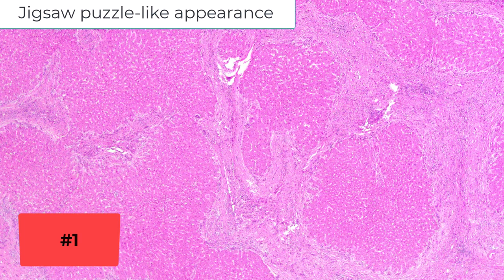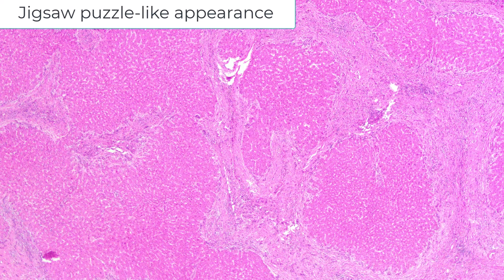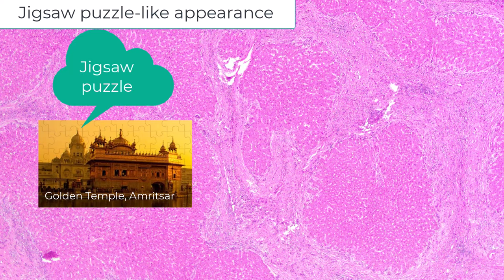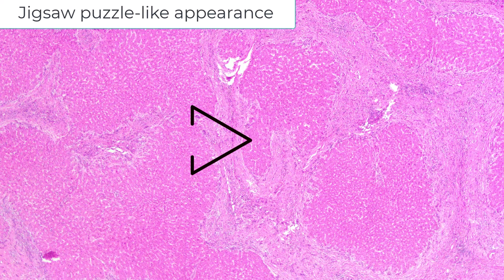The low-bar appearance of chronic cholestasis-related cirrhosis is very characteristic. It essentially looks like a jigsaw puzzle. And here is that jigsaw puzzle-like appearance: nodules of regenerative liver shaped like pieces of a jigsaw puzzle, surrounded by all of this fibrosis.